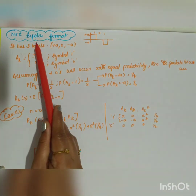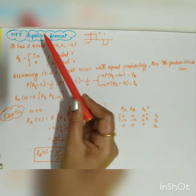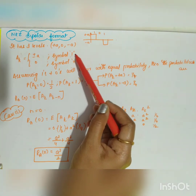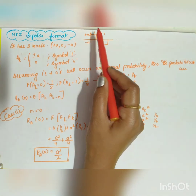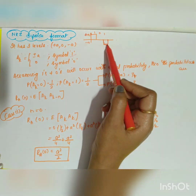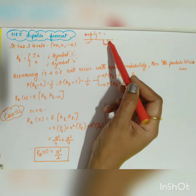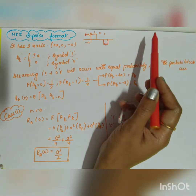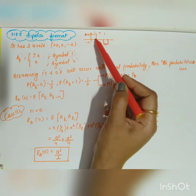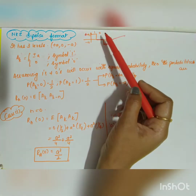The next type is Bipolar Non-Return-to-Zero format. In Bipolar NRZ, when you have consecutive ones, the value alternates: the first one takes +A, the next one takes -A, then +A again, and so on. For zero, the value is equal to zero.